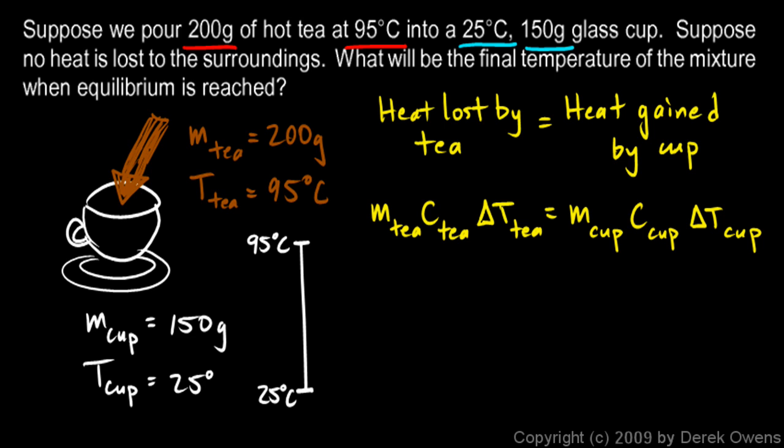And you should be able to tell that the final temperature, that's what we're trying to find here, what is the final temperature when equilibrium is reached? It's going to end up somewhere in between. The cup will warm up, but it can't possibly warm up to higher than 95 degrees. And the tea is going to cool off as a result of being in contact with the cooler cup. But it can't possibly cool down to below 25.